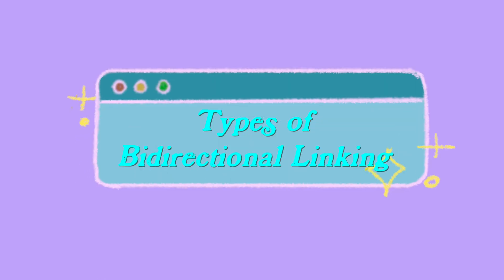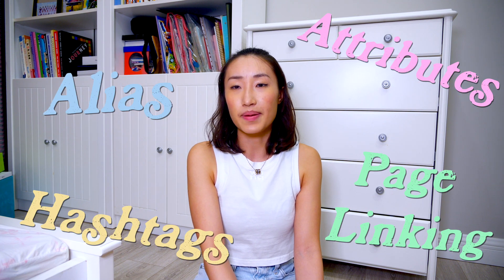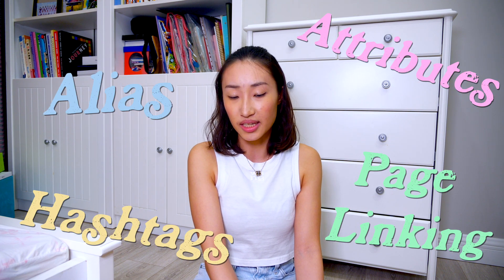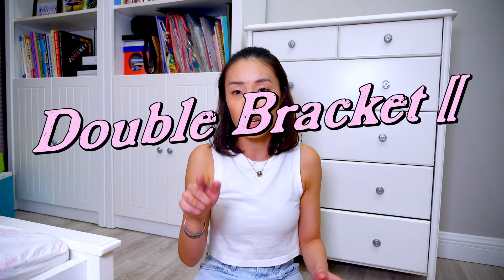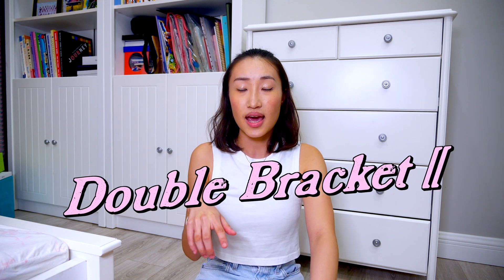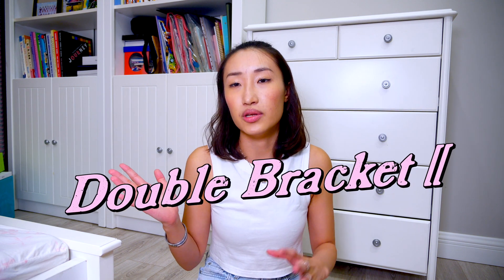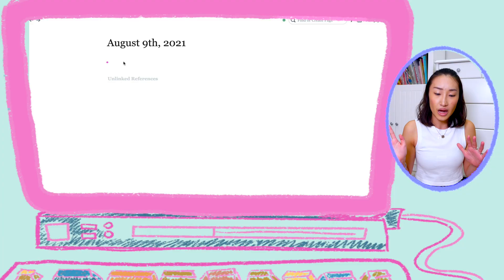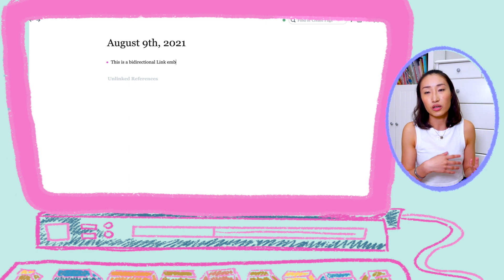For bi-directional linking in Roam Research, there are four methods: attributes, alias, hashtags, and page linking. Page linking is triggered by double brackets. In this use case, I will integrate it within a sentence — I use this when I'm typing a block of text and linking to a page of notes that I may be synthesizing.